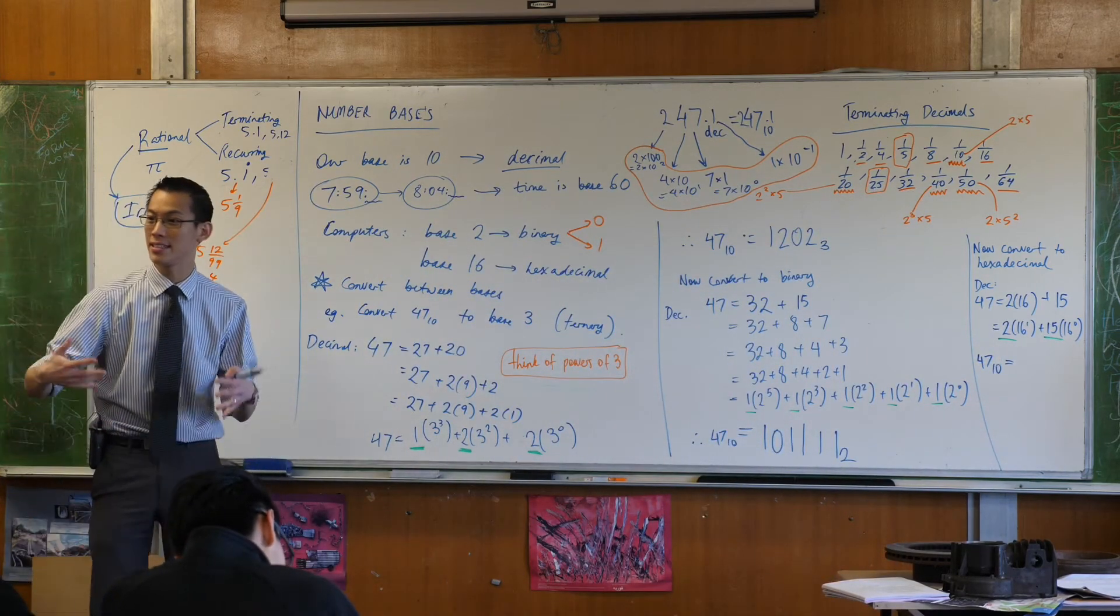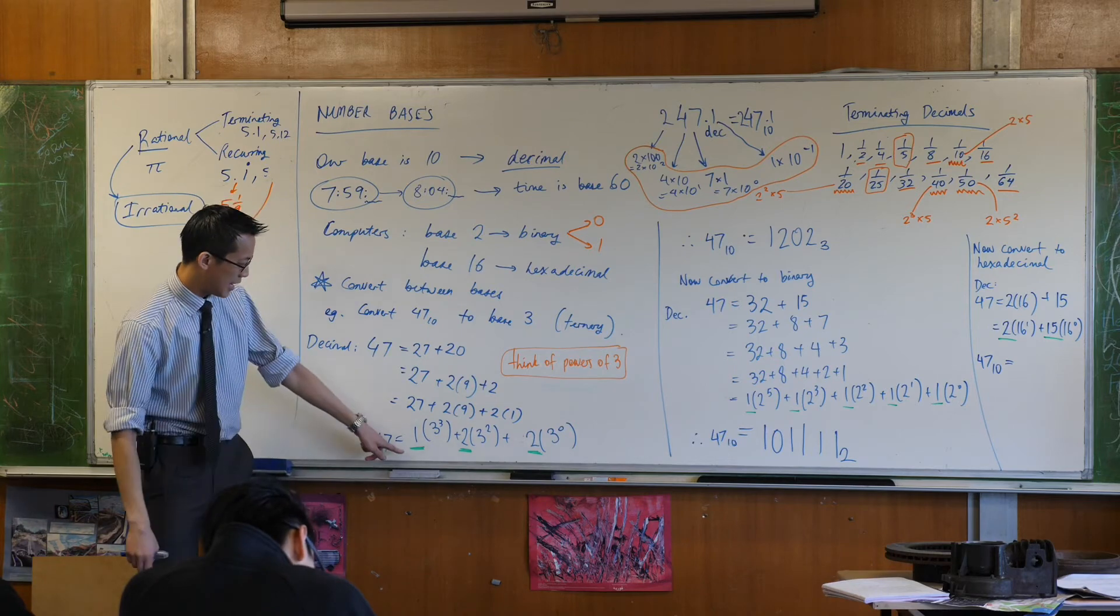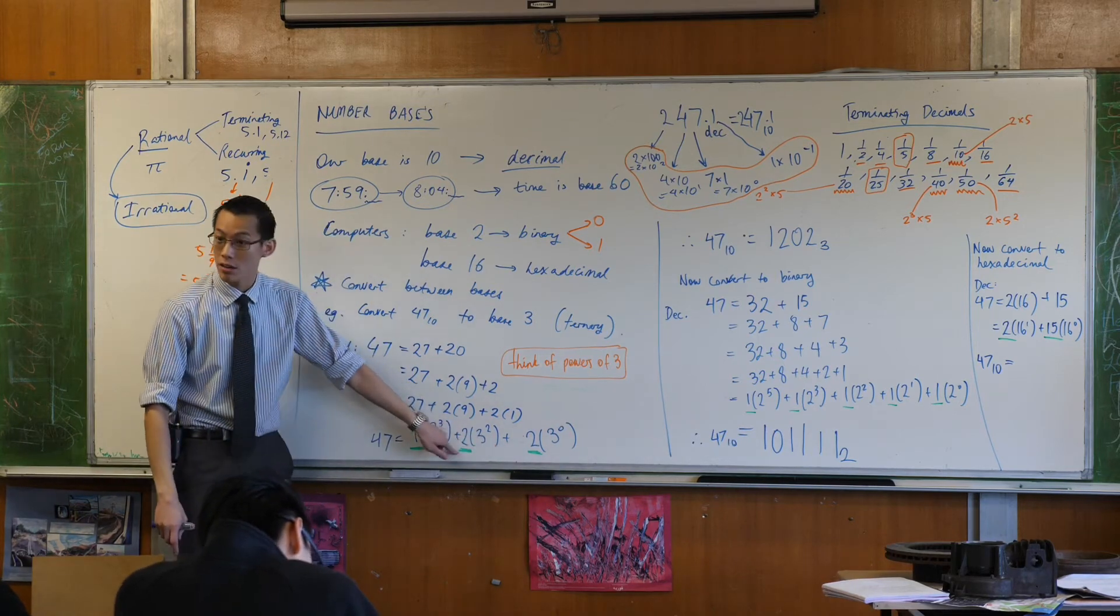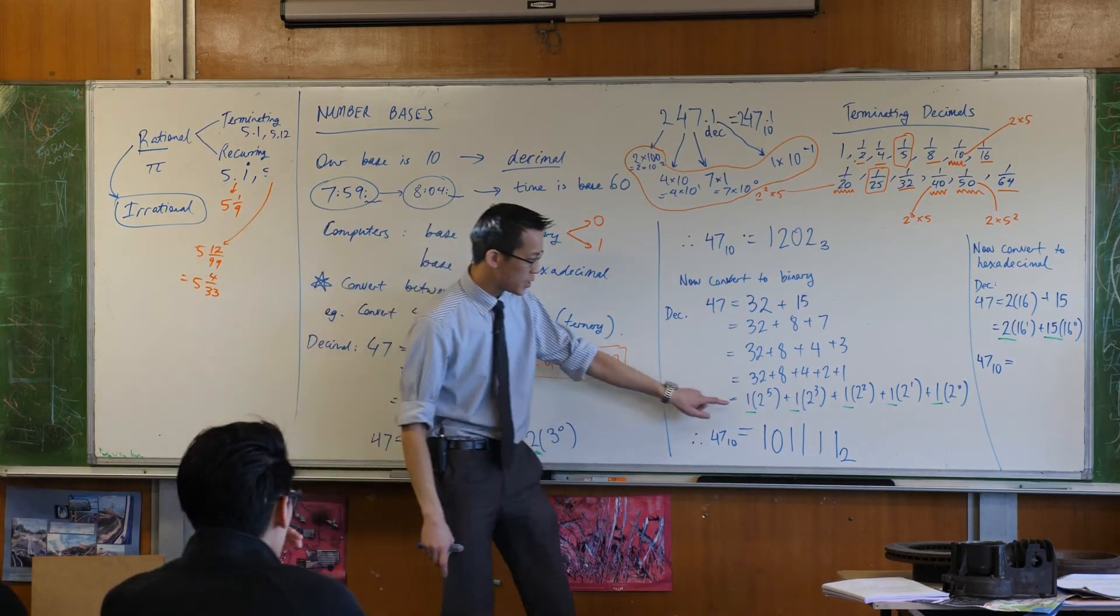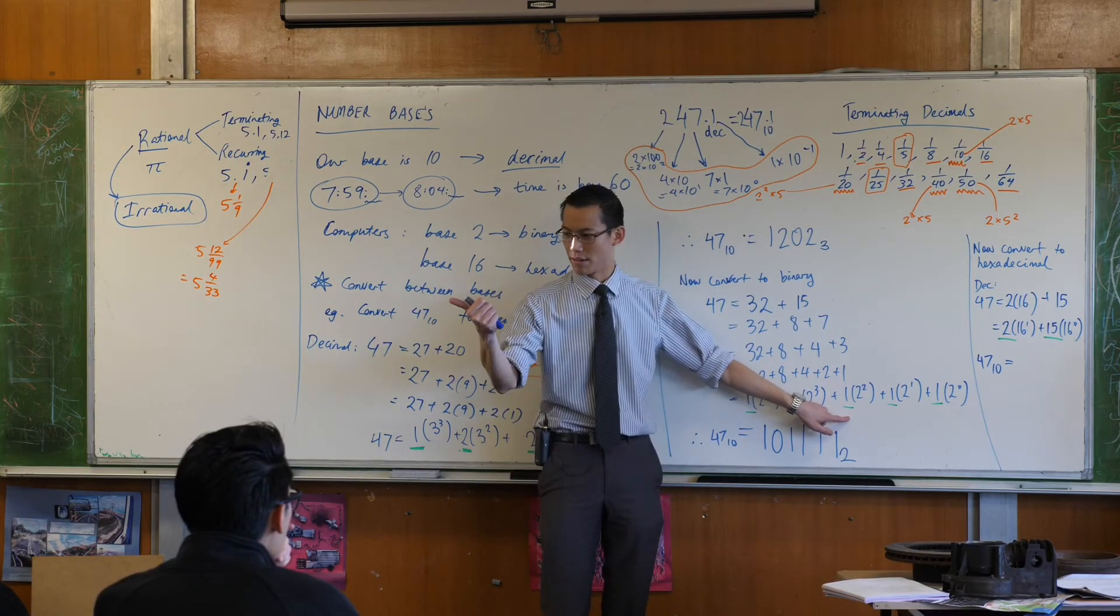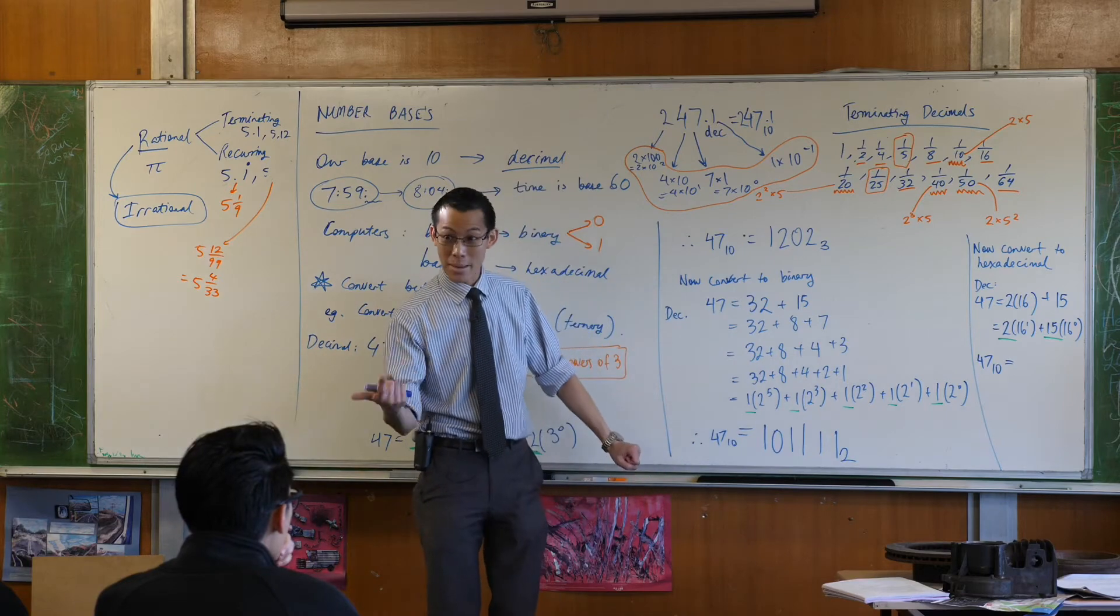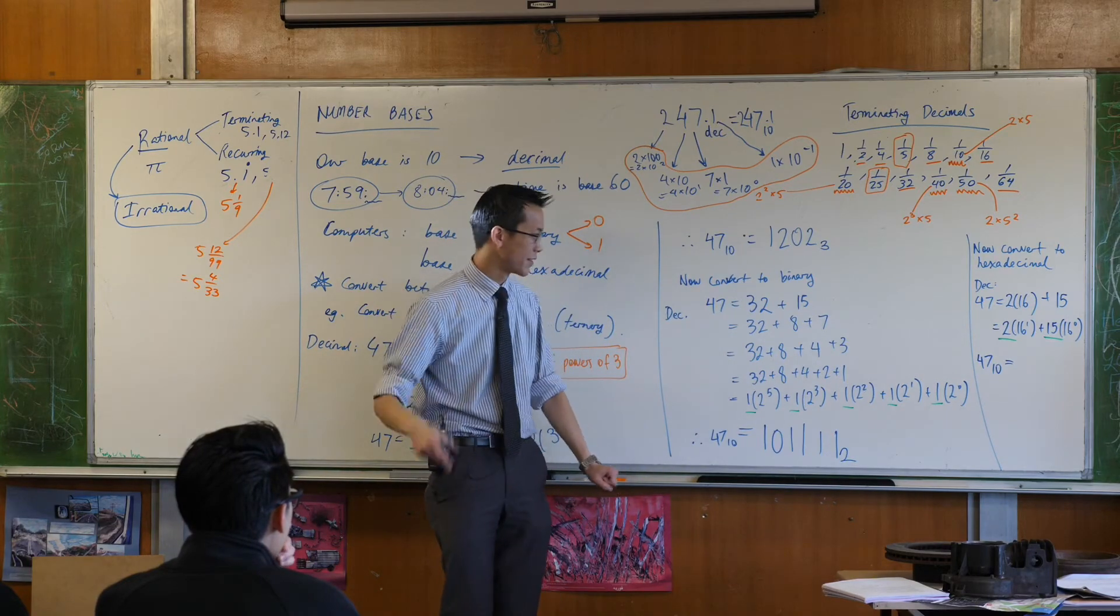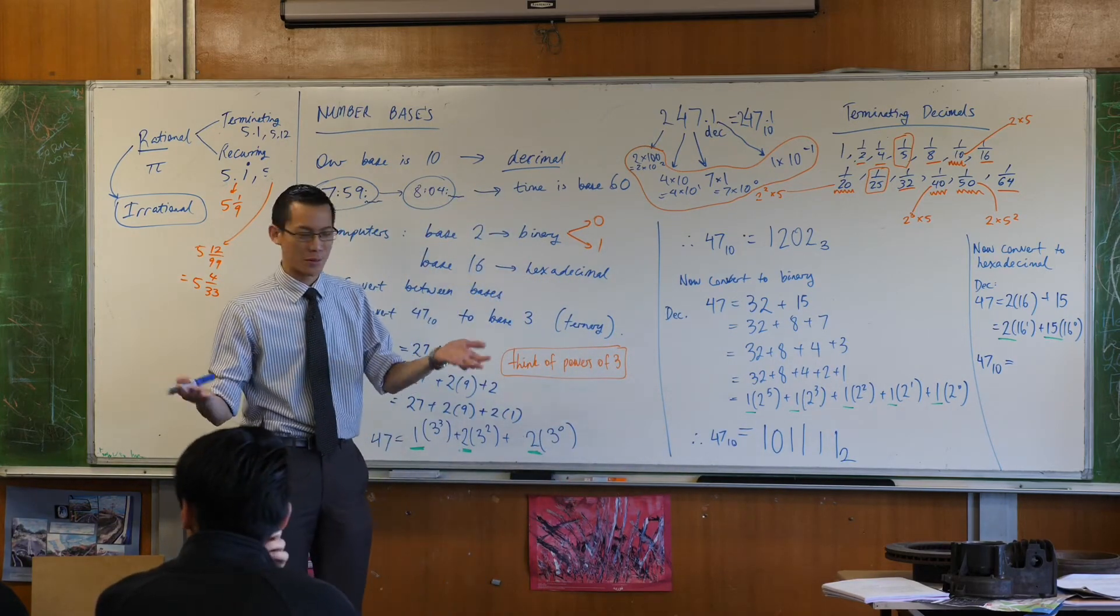2 and 15. Each one of those has a hexadecimal digit. Just like here, each one of these was a ternary digit. And each one of these was a binary digit. By the way, we have an abbreviation for binary digit. Binary digit. We call it a bit. That's what bits are, if you're wondering what bits are.